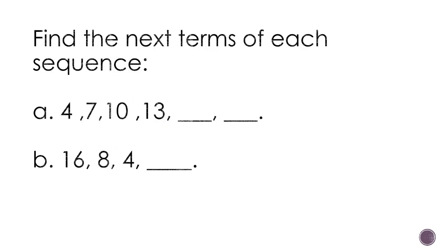Let's try some exercises. Find the next terms of each sequence. In the first one, 4, 7, 10, 13. It's very obvious that in this sequence, you're just adding 3. Four plus 3 is 7, 7 plus 3 is 10. The next term is 16, and so the next term is 19.